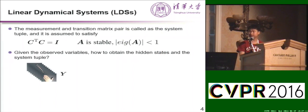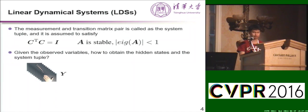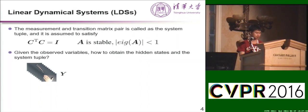The system parameters A and C can be learned efficiently. A is called the transition matrix and C is called the measurement matrix. There are also two assumptions here. First, the measurement matrix C is orthogonal, meaning that C transpose C is equal to the identity matrix. And I also want a stable system, meaning that the eigenvalues of A are less than 1. If not, the time series will diverge. So the next question is: how can we obtain C and A if I am given a video?